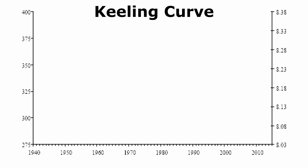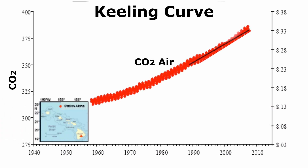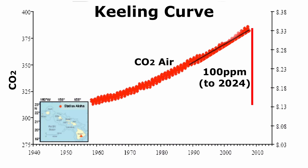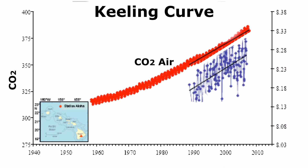This is called the Keeling Curve. In 1958, Charles David Keeling started collecting data about carbon dioxide in the atmosphere in Hawaii. We can see in the 60 years of data collection that the CO2 in parts per million goes up by about a hundred. In the late 80s, we started collecting data about what the increased CO2 in the atmosphere was doing to the amount of CO2 dissolved in the ocean, and that data showed there was an increasing amount of CO2 developing in the ocean — we're sort of making the ocean more carbonated.